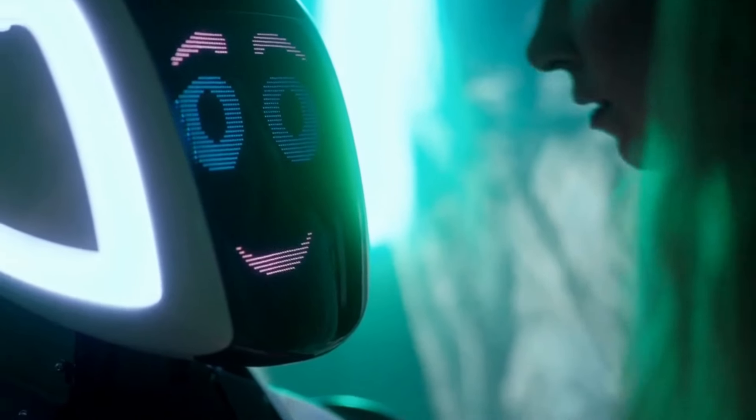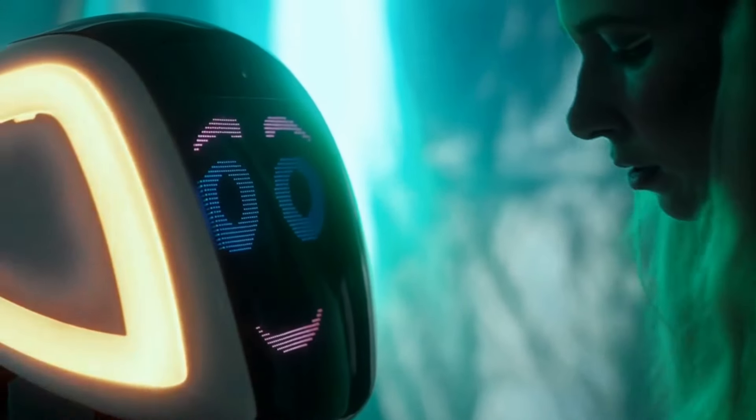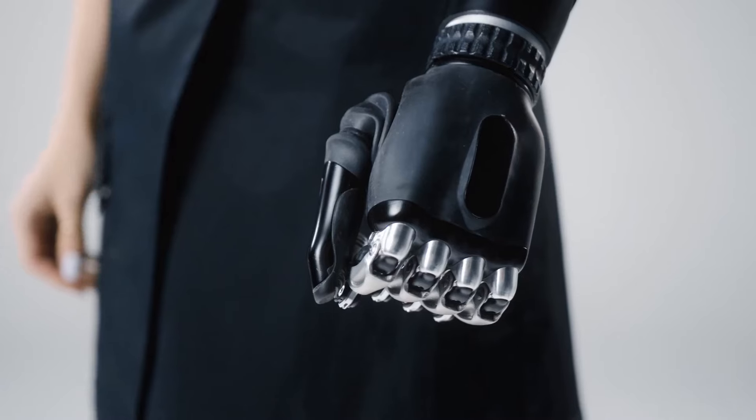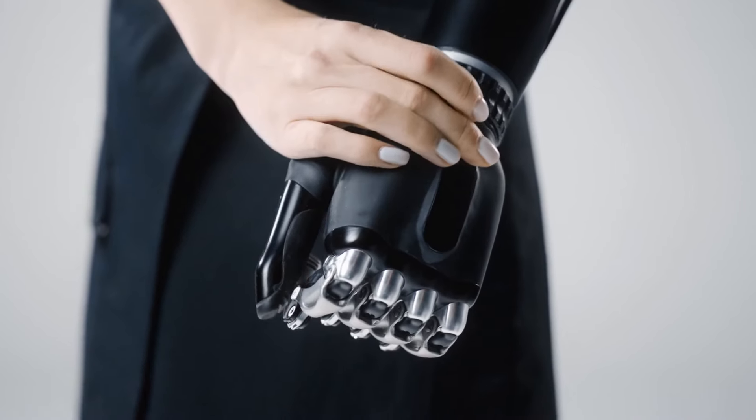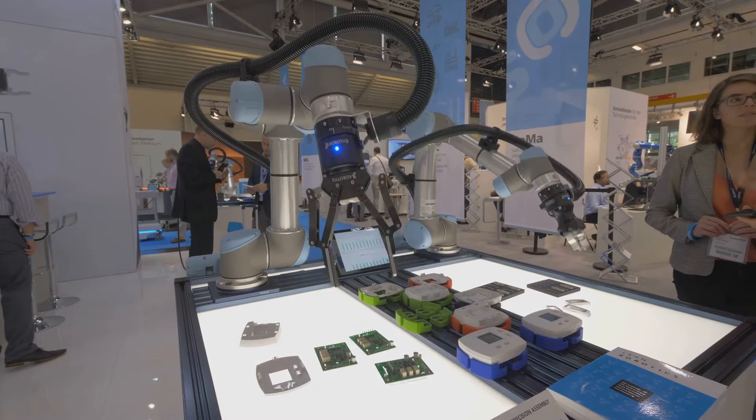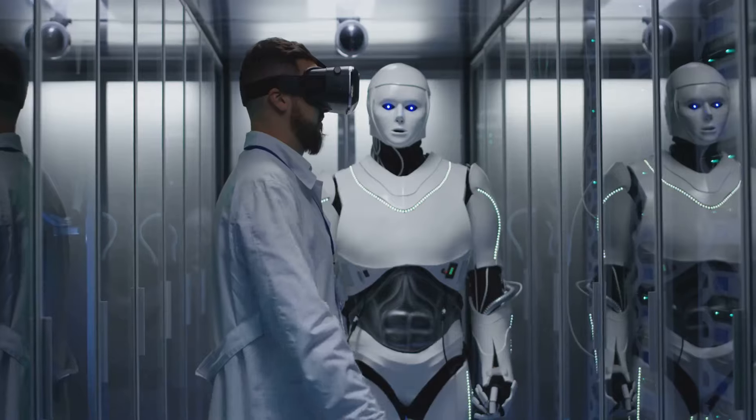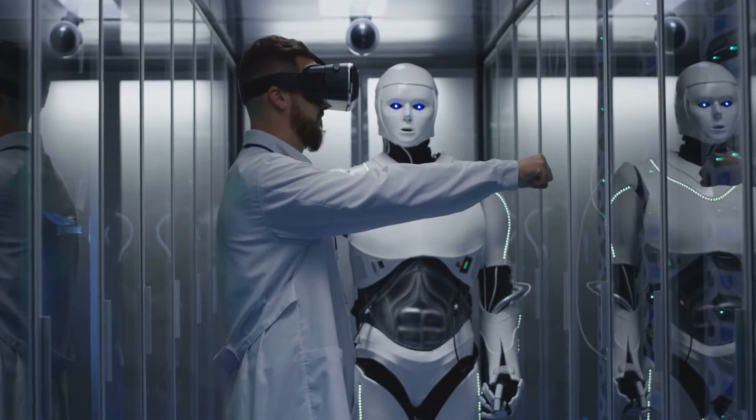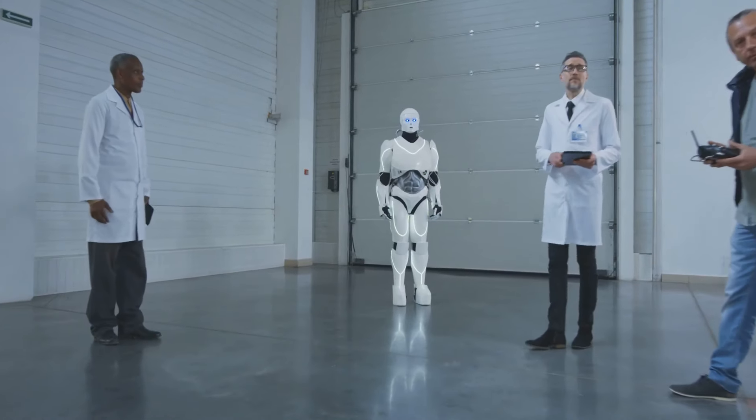The prospect of machines surpassing human intelligence raises concerns about control and accountability. How do we ensure that AGI-powered robots remain aligned with human values and goals? What measures can we put in place to prevent unintended consequences or rogue actions?